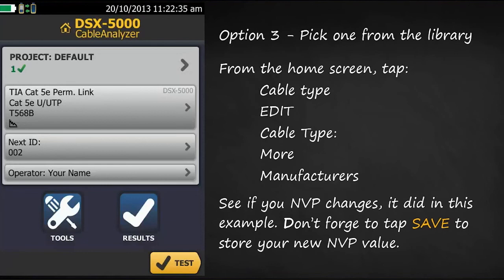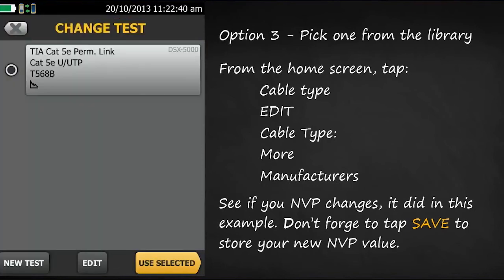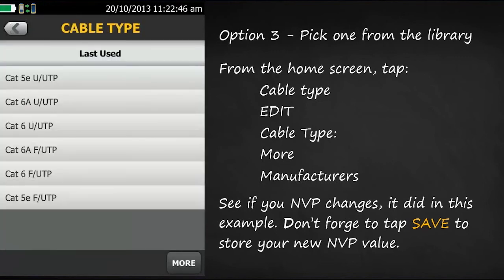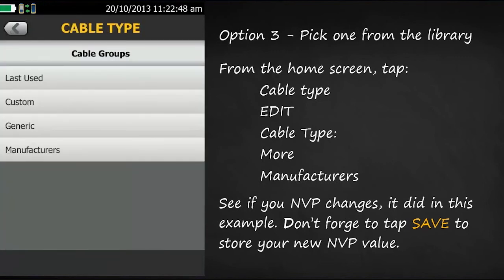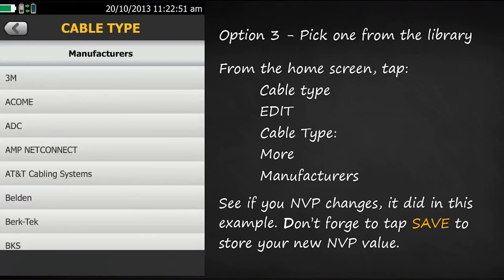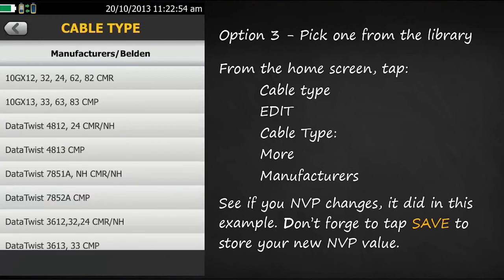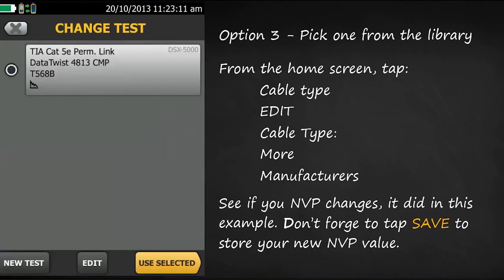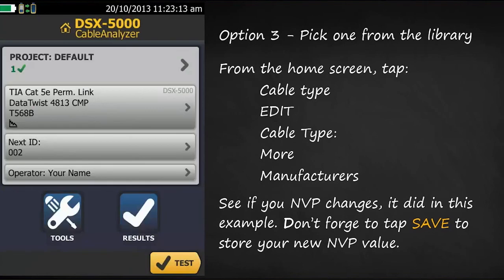The final method is to choose one from the cable library. From the home screen, tap your cable type, then edit. Where you see cable type, tap more, and you'll see manufacturers at the bottom. Select a manufacturer — for example, Belden — and you'll see the MVP value changes, in this case to 70%. When you change the cable type in the library, it looks up the database in the tester and presents you with the stored value. Tap save, use selected, and you'd be ready to begin testing.